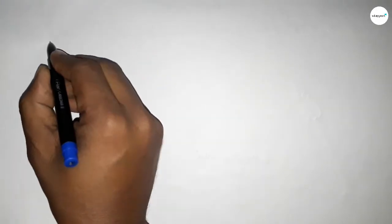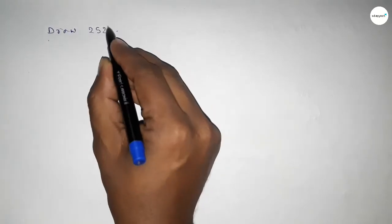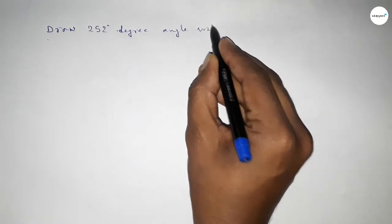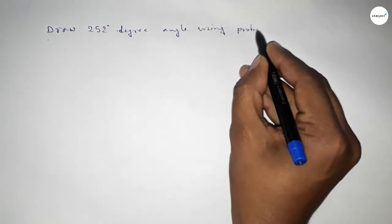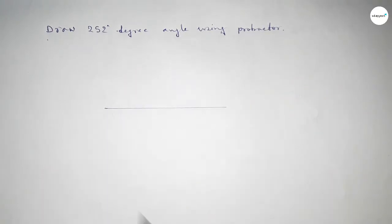Hi everyone, welcome to SI Share Classes. Today in this video we have to draw a 252 degree angle by using protractor. So let's start the video. First of all, we have to draw here a line of any length.